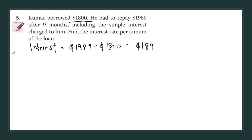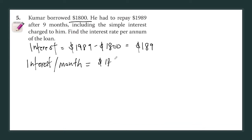So in nine months he has accumulated interest of $189. Because this is simple interest, every month they deduct the same amount based on the starting amount of $1,800. So interest per month is $189 divided by 9, which means every month $21 is deducted. That's why after nine months he owes $189 in interest.